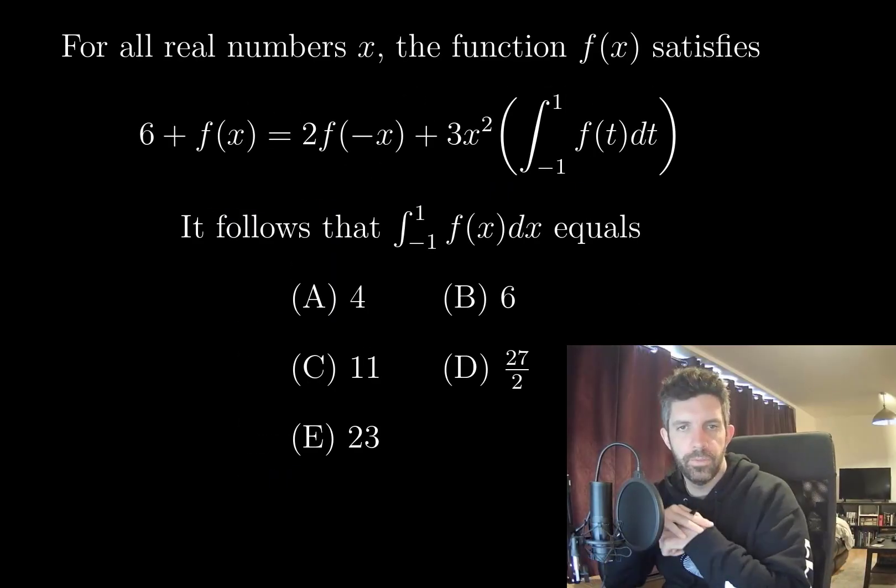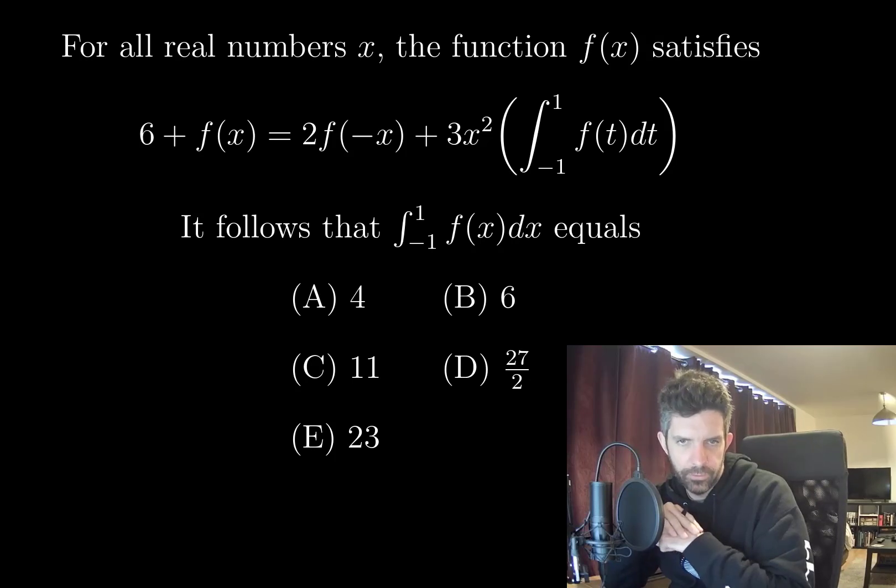For all real numbers x, the function f(x) satisfies 6 + f(x) = 2f(-x) + 3x² times the integral from -1 to 1 of f(t)dt. It follows that this integral equals (A) 4, (B) 6, (C) 11, (D) 27/2, or (E) 23.